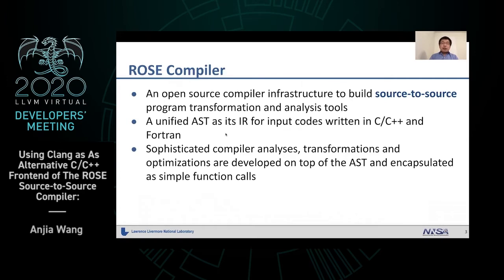Rose is an open source compiler to build source-to-source program transformation and analysis tools. It takes C and Fortran as input and creates a unified AST. It can perform compiler analysis, transformation, and optimization using simple function calls.